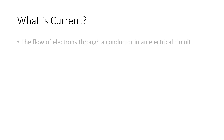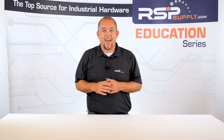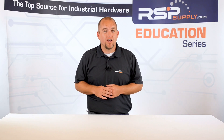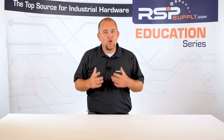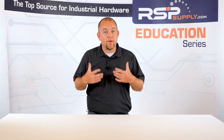Current is simply the flow of electrons through a conductor — or something that is good at allowing electrical charge to pass through it — in an electrical circuit. As we have previously mentioned in our other videos, in order for electrons to flow, there are a few things that need to be in place.